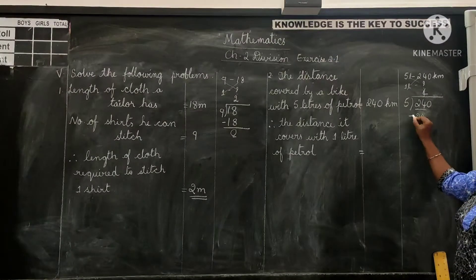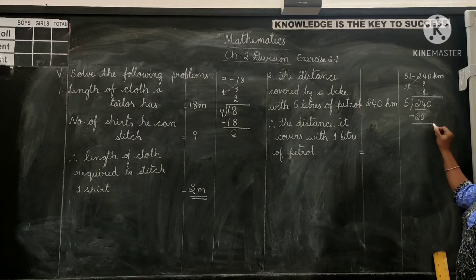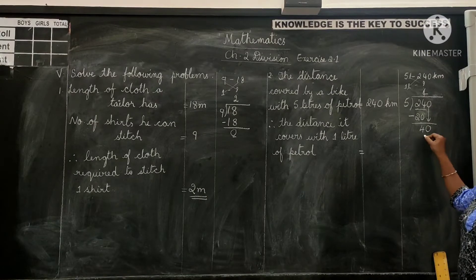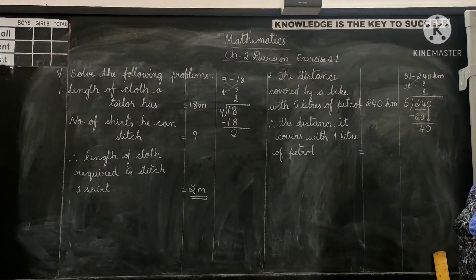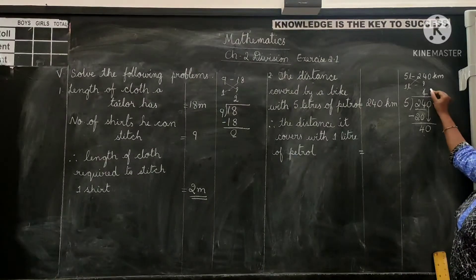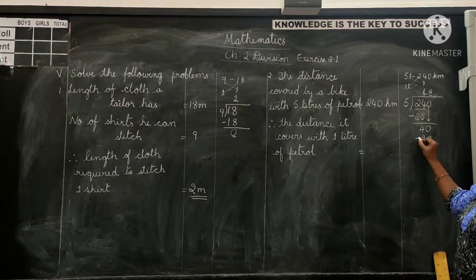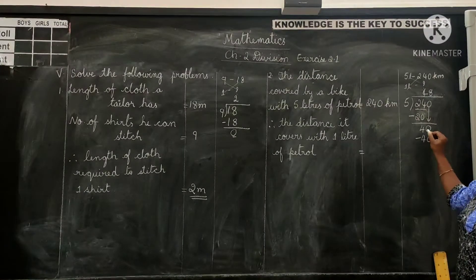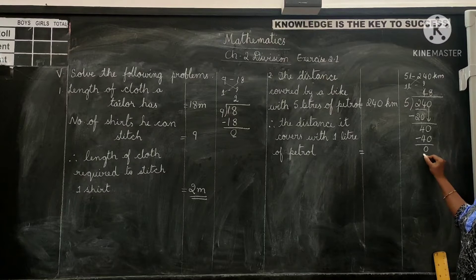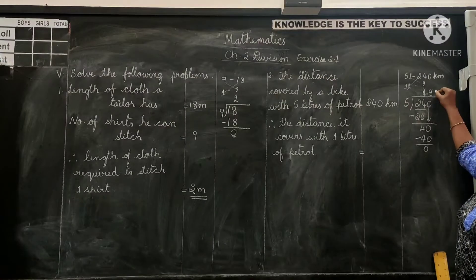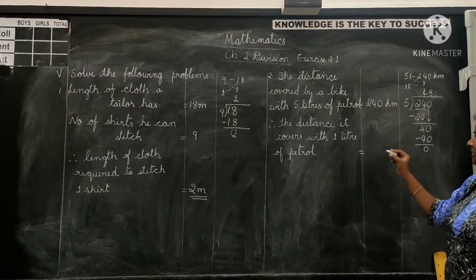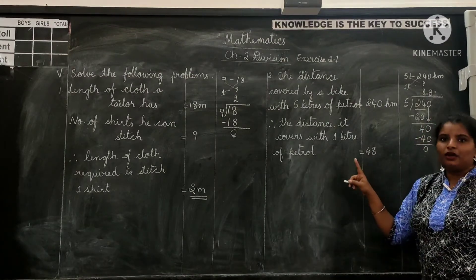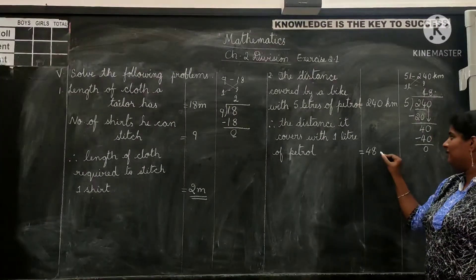And now get the next number down, that is 0, and here you get 40. So 5 eight times gives you 40. 8 in quotient's place, 40 under dividend. And now subtract 40 from 40, that gives you 0. Nothing remained here. So 48 in quotient is the distance covered by the bike with one liter of petrol, 48 kilometers.